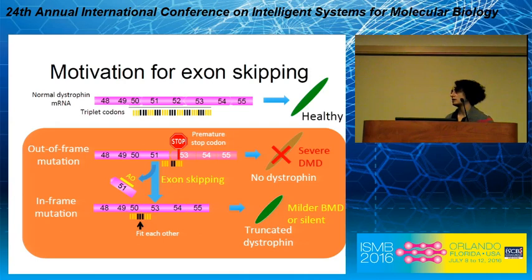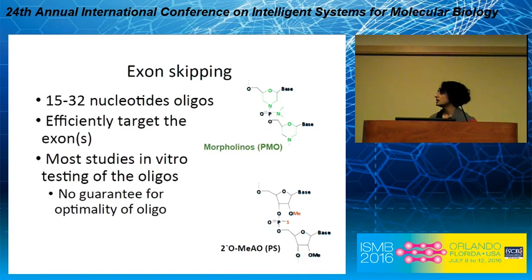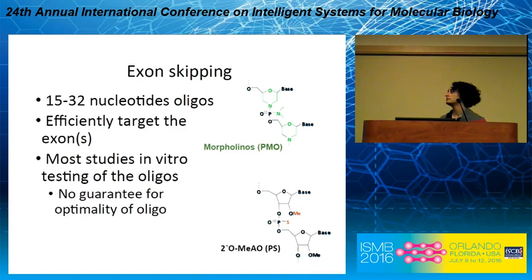Exon-mediated skipping uses this phenomenon as a therapy to convert severe DMD phenotypes to milder types. Antisense oligos are short synthetic oligonucleotides that target specific exons. On the right are two commonly used antisense chemistries in clinical trials. In this talk and in my poster, we focus on the morpholinos. Antisense oligos are supposed to target the exon very selectively and be very specific.